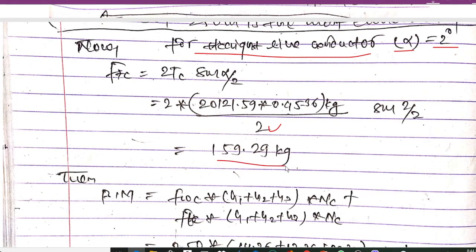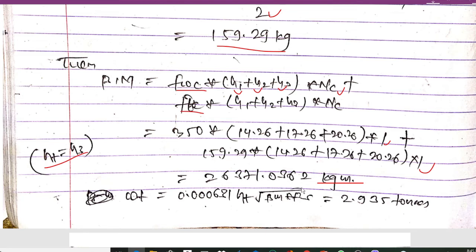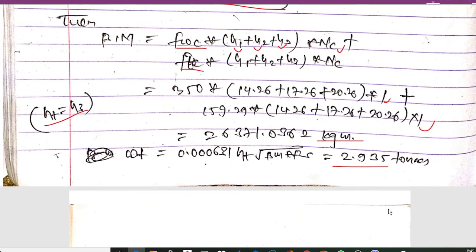The bending moment is: BM = Fwc × (S1 + S2 + S3) × nc + Ftc × (S1 + S2 + S3) × nc, where nc (number of circuits) = 1. Substituting the calculated values of Fwc = 350 kg, Ftc = 159.29 kg, and the S values gives a bending moment of 26371.0362 kg·m. The tower weight is then calculated using: W = 0.000631 × ST × √(BM × UTS / safety factor), yielding W = 2.935 tons for the 250-meter span.